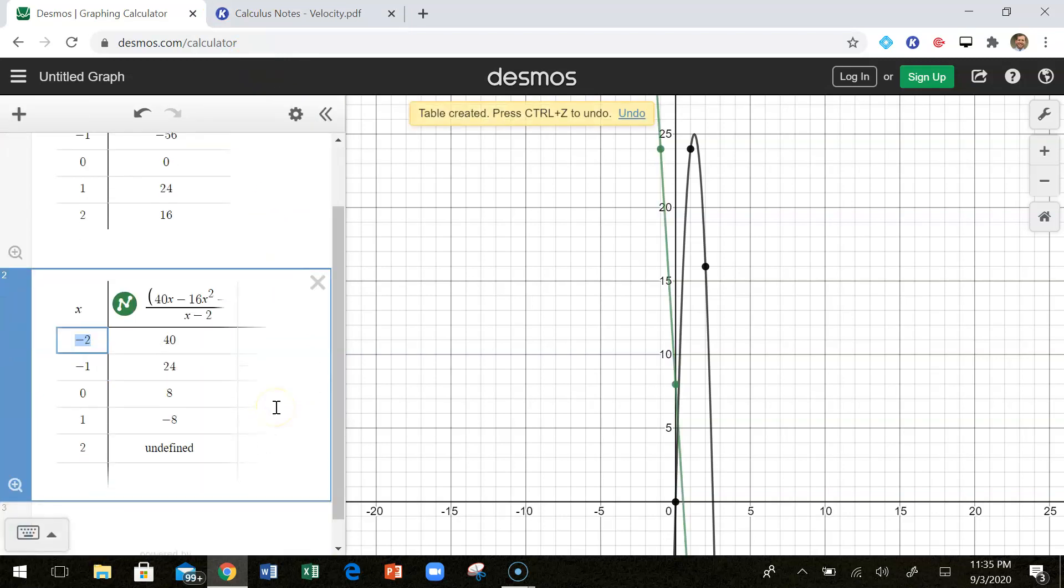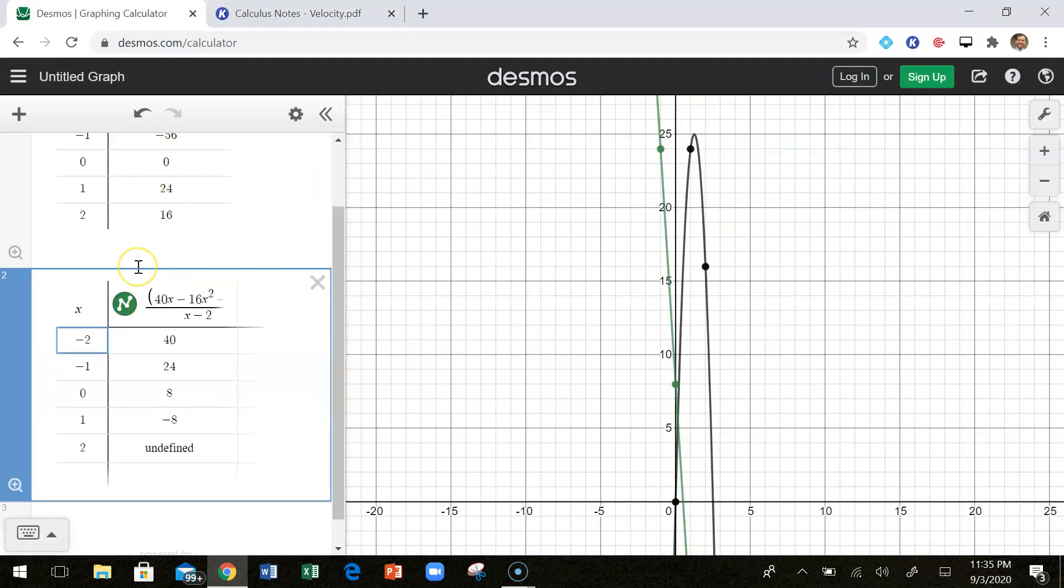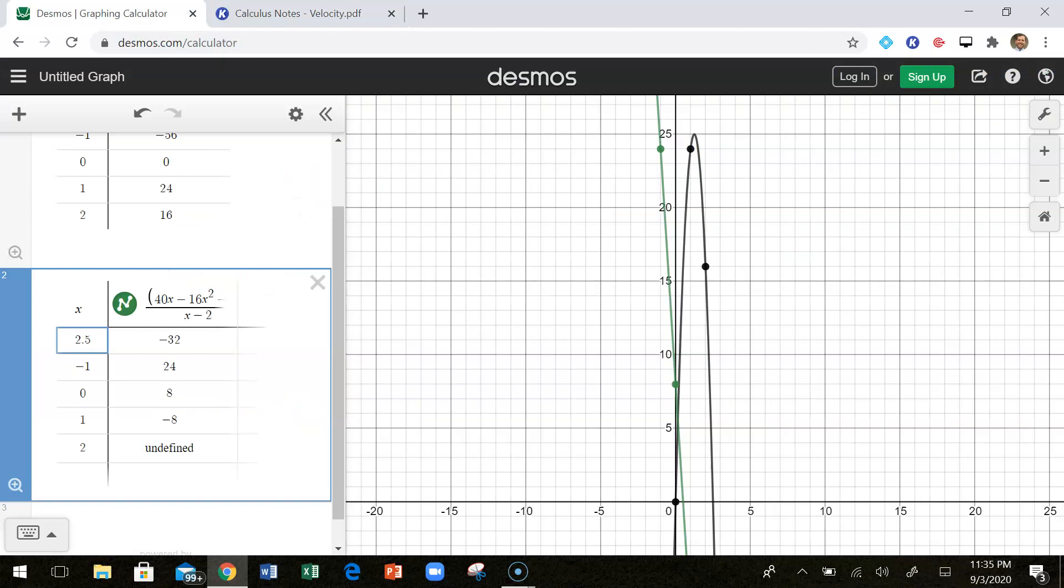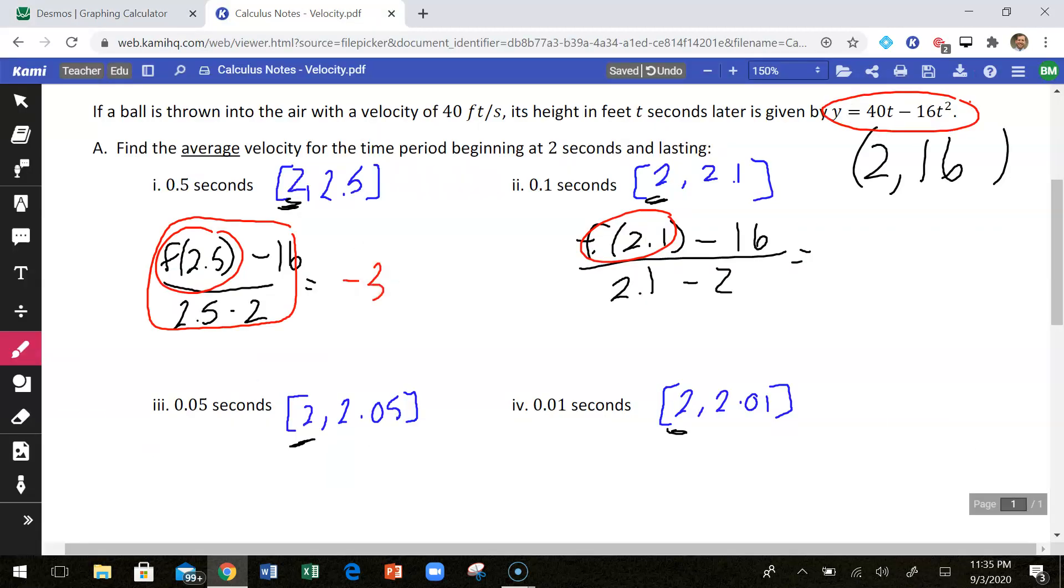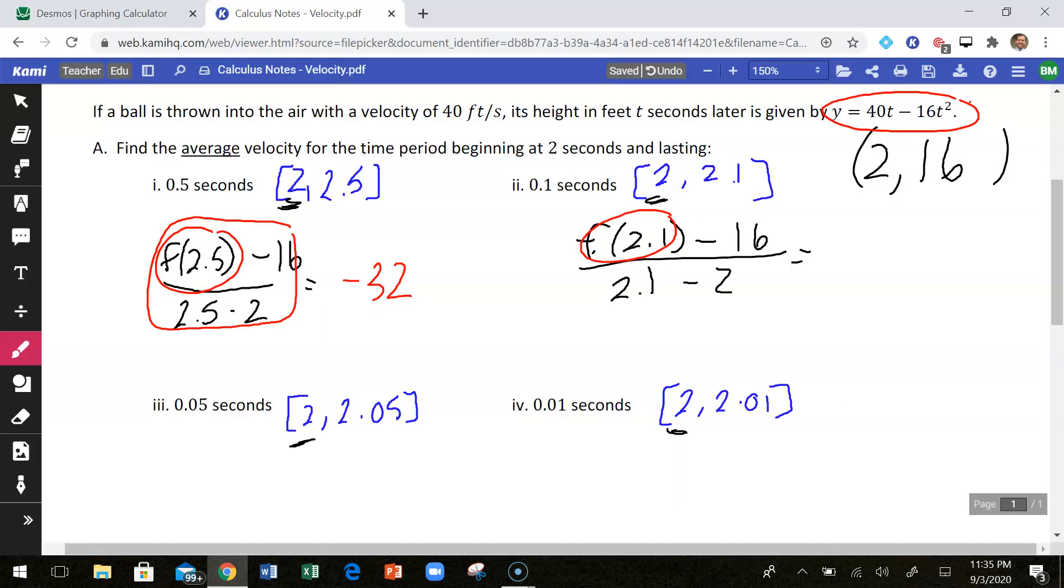So the first one we wanted to plug in was 2.5. So if we plug in 2.5, what I just found by plugging that in is if I plug in 2.5, this whole formula is going to give me negative 32. Well, if I plug in 2.1, I get negative 25.6.